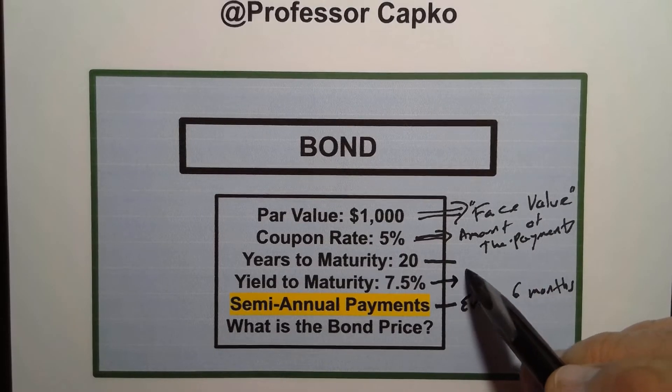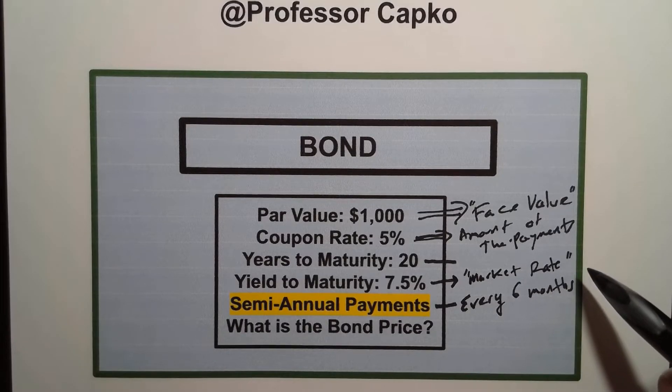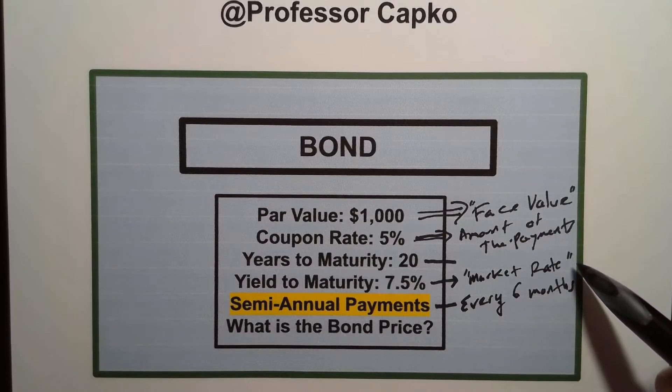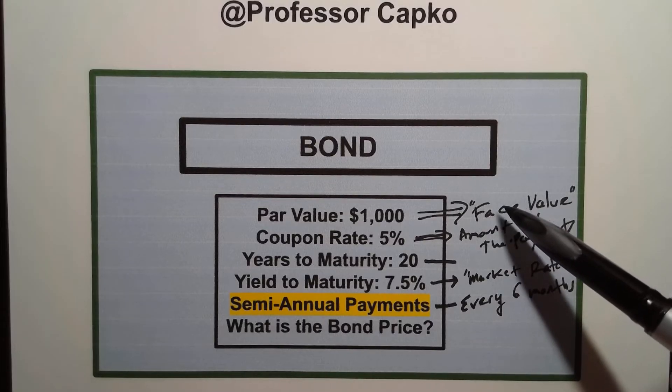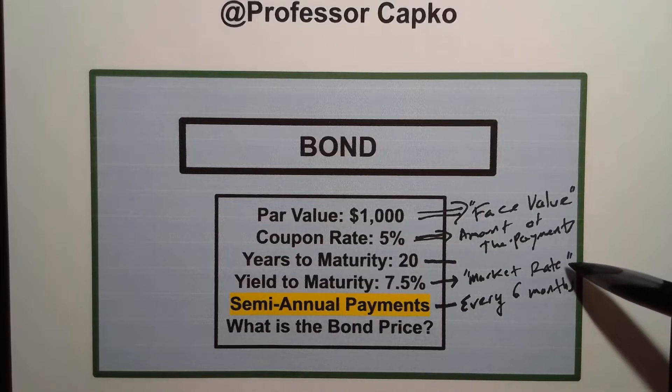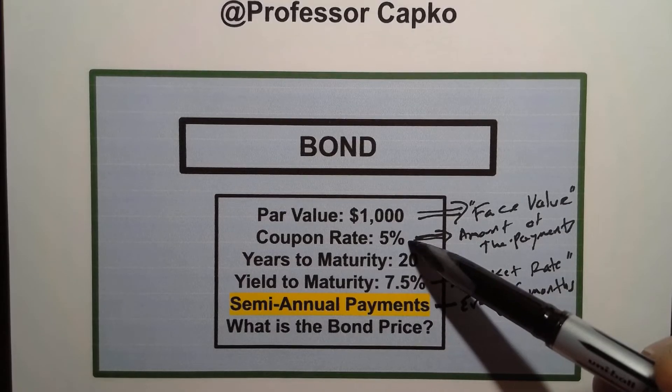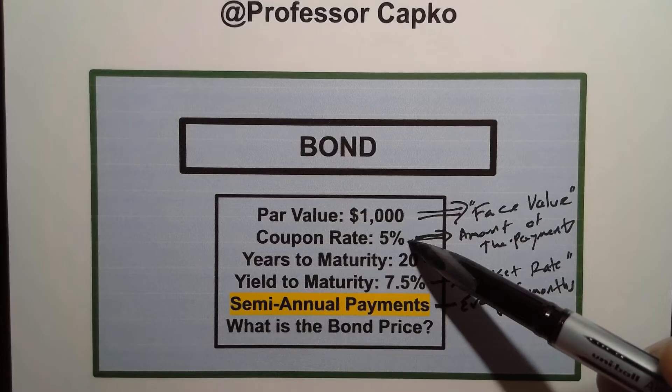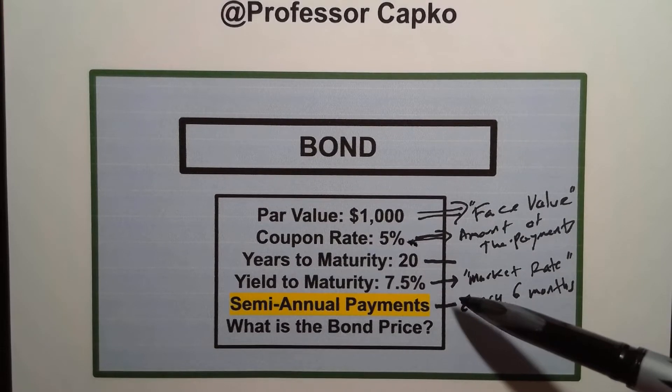And finally the yield to maturity that is the market rate. That is the rate that the market is looking for for this type of bond. In other words what type of interest investors are seeking from a bond with this profile. This is from a corporation with a certain amount of risk and that is what the market has decided is the interest rate that should be assigned to this bond. Usually it's the market rate and it is usually not the same as the coupon rate. The coupon rate is decided when the bond is issued based on various things that the company decides or if it's a municipality decides that it's going to pay.